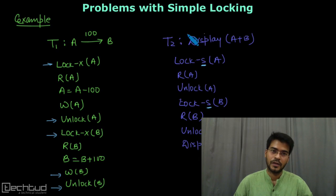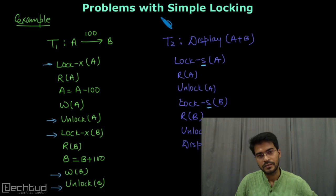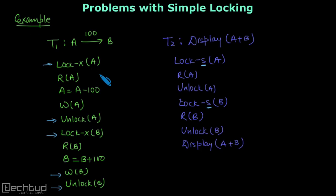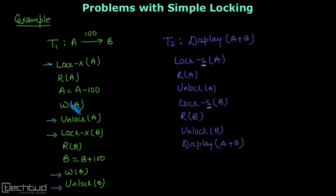Welcome to techtot.com. In this lecture we will understand what are the problems with the simple locking protocol. In the last lecture we saw that we can use locking to execute transactions. Whenever we need to use a data item, we first lock it — if it is read-only we use a shared lock, and if it is a write we use an exclusive lock. Once our use is over, we release the lock. Now we will see how this creates a problem when we execute transactions concurrently in an interleaved fashion.